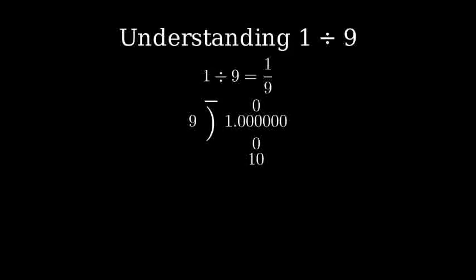9 goes into 10 one time with a remainder of 1. We bring down another zero, and 9 goes into 10 one time again with a remainder of 1. This pattern continues forever. Every time we bring down a zero, we get 1 as our quotient and 1 as our remainder.